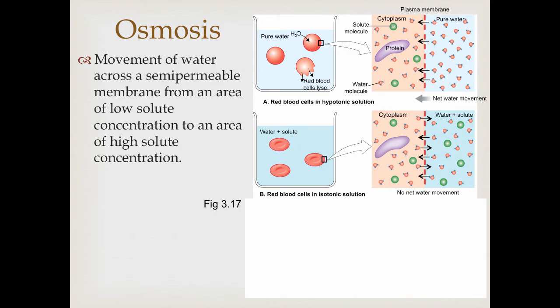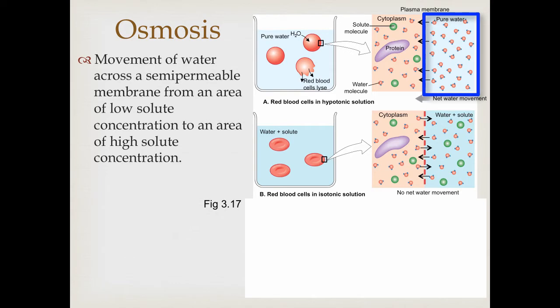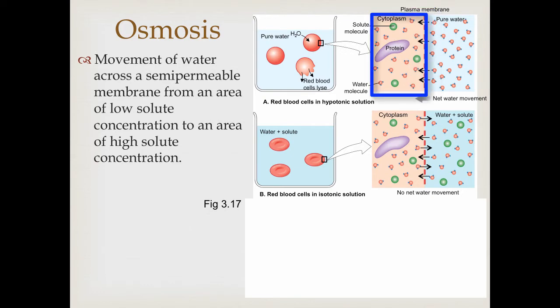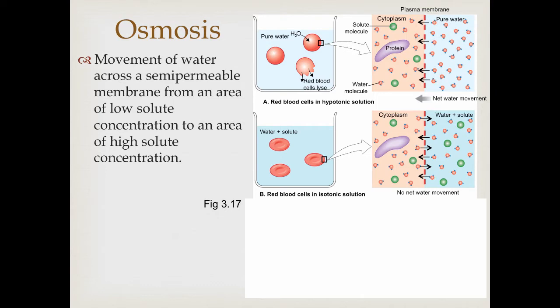However, if you have a hypotonic solution — in this case pure water — there are no solutes in it. Now we have an area of very low solute in the water, none. Water is going to want to flow into the cells, which do have solutes represented here by the little green spheres. The net movement of water is going from an area of low solute concentration — pure water — to higher solute concentration. The cell is going to continually accumulate water until it ruptures.